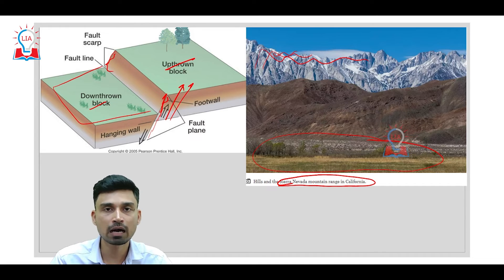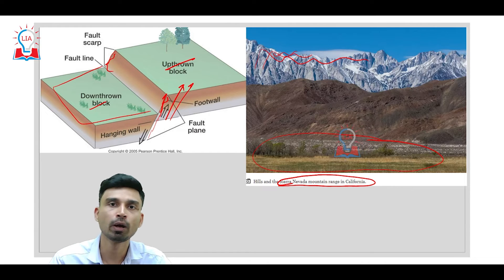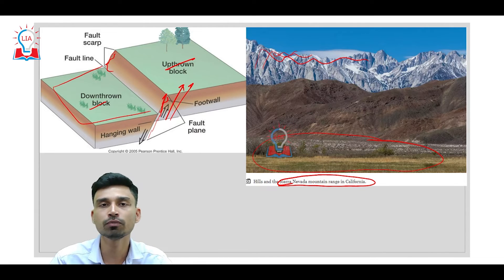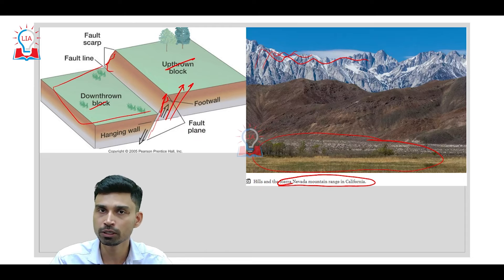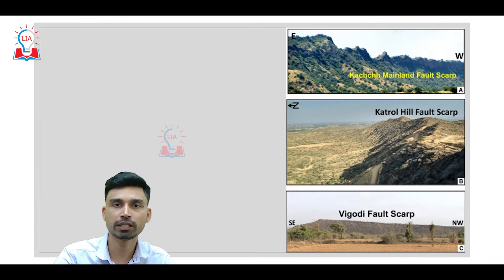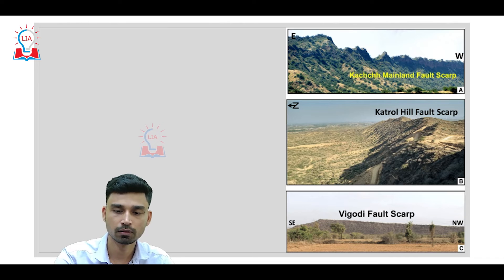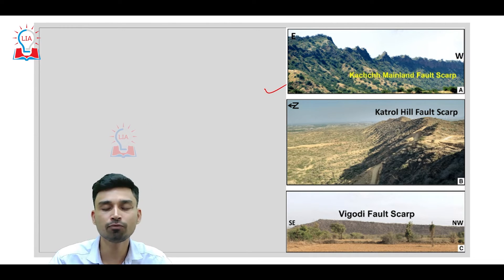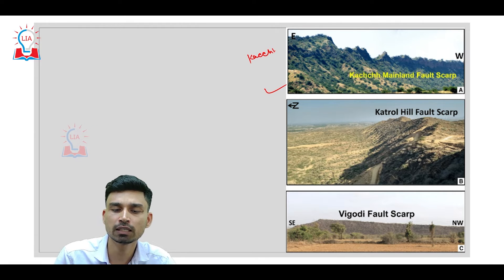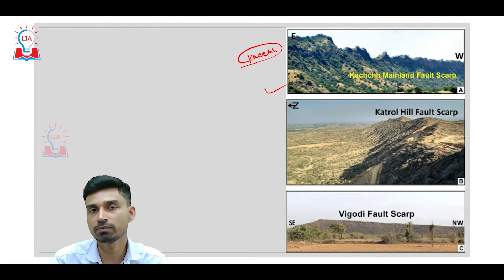To make it clear: escarpment forms when the central part of a landmass is displaced in the downward direction, while a fault scarp forms when part of the landmass is thrown or moved in the upward direction. Both happen due to forces originating from below the earth — these landforms are results of what can be called endogenic forces. In India, fault scarps are also developed, and most are found in the Kutch region of Gujarat, where tectonic disturbance is observed.